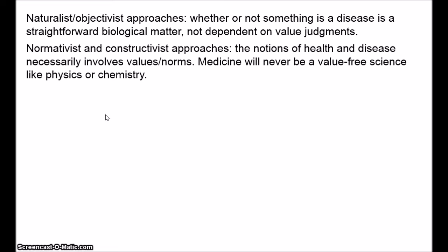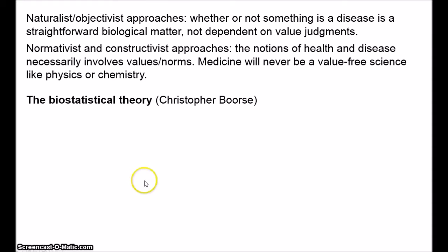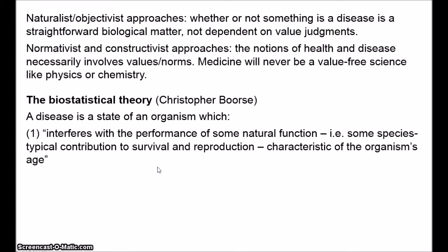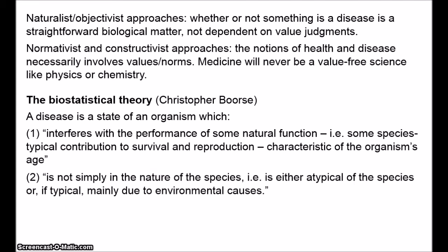By far the most famous naturalist account is Christopher Boorse's biostatistical theory of disease. Boorse wants to give a completely empirical, value-free account of disease — a purely biological state. Boorse draws a distinction between illness and disease. According to Boorse, a disease is a state of an organism which, first, interferes with the performance of some natural function, i.e. some species-typical contribution to survival and reproduction characteristic of the organism's age, and second, is not simply in the nature of the species — i.e. is either atypical of the species or, if typical, mainly due to environmental causes.